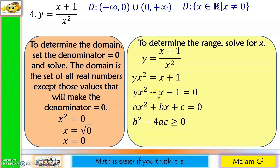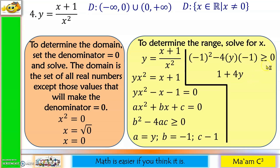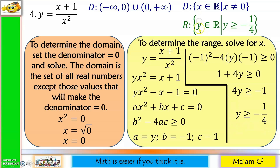Substituting into the discriminant: (−1)² − 4(y)(−1) ≥ 0, giving 1 + 4y ≥ 0. Moving 1 to the other side: 4y ≥ −1. Dividing by 4: y ≥ −1/4. So the range is y ∈ ℝ such that y ≥ −1/4. In interval notation: [−1/4, +∞) — using a bracket because of the 'or equal to.'